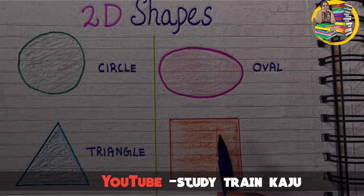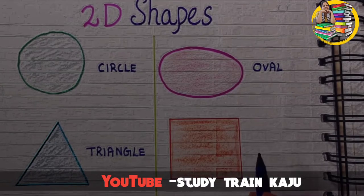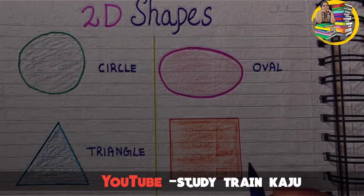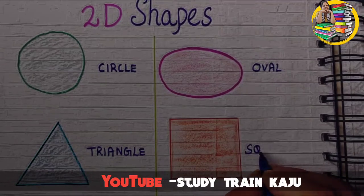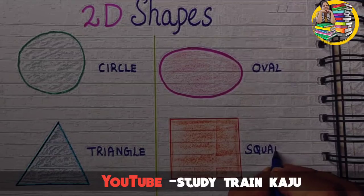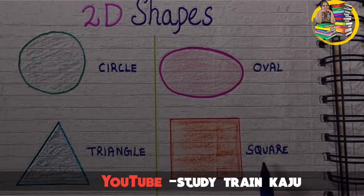The next shape has 4 sides and 4 corners, and all the sides are equal. It is a square. S-Q-U-A-R-E. Square.